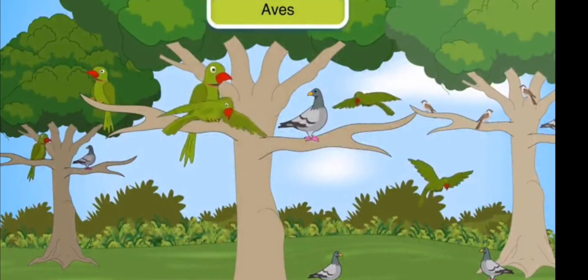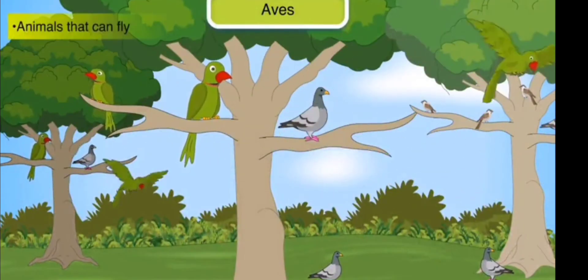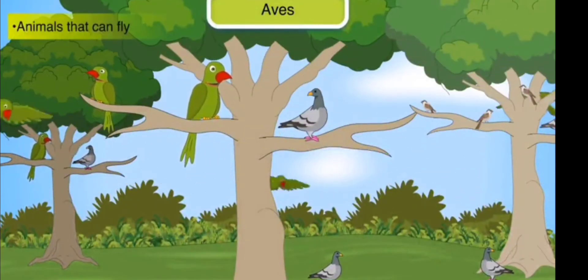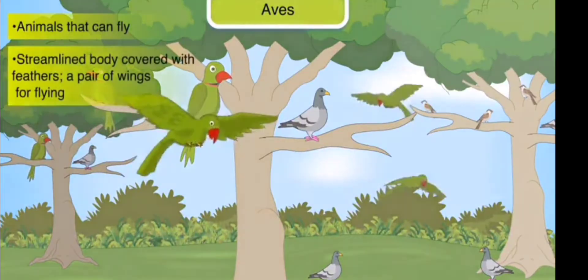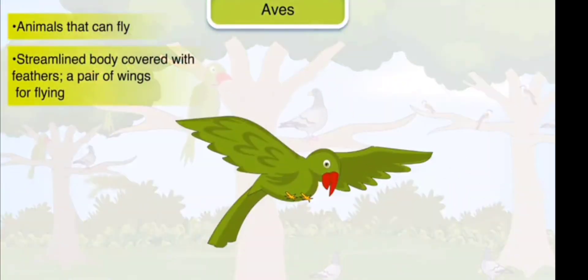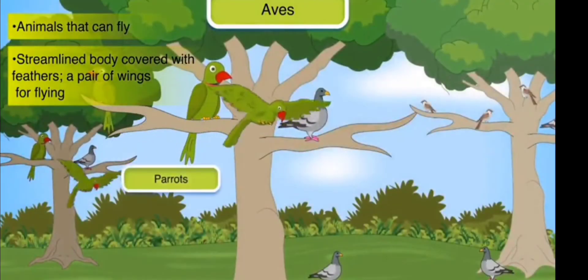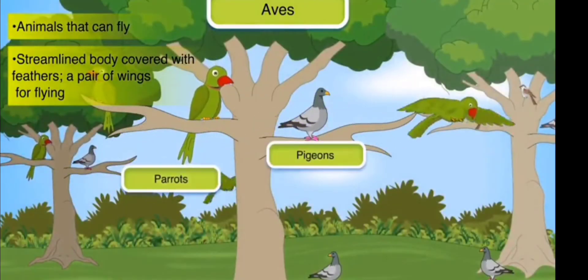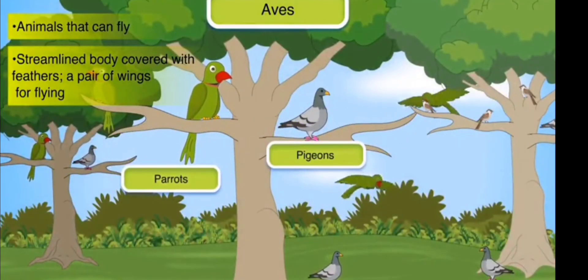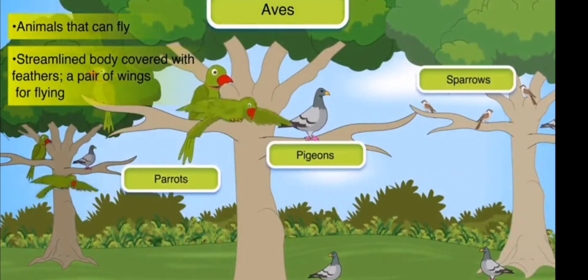Aves: Aves or birds are animals that can fly. They have a streamlined body covered with feathers. They also have a pair of wings for flying. Parrots, pigeons, and sparrows are examples of birds.